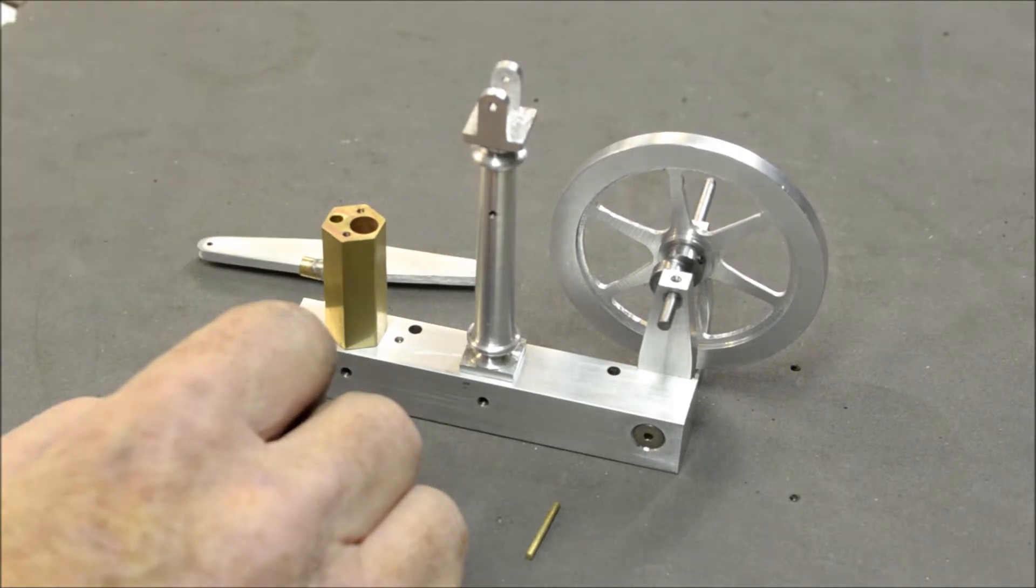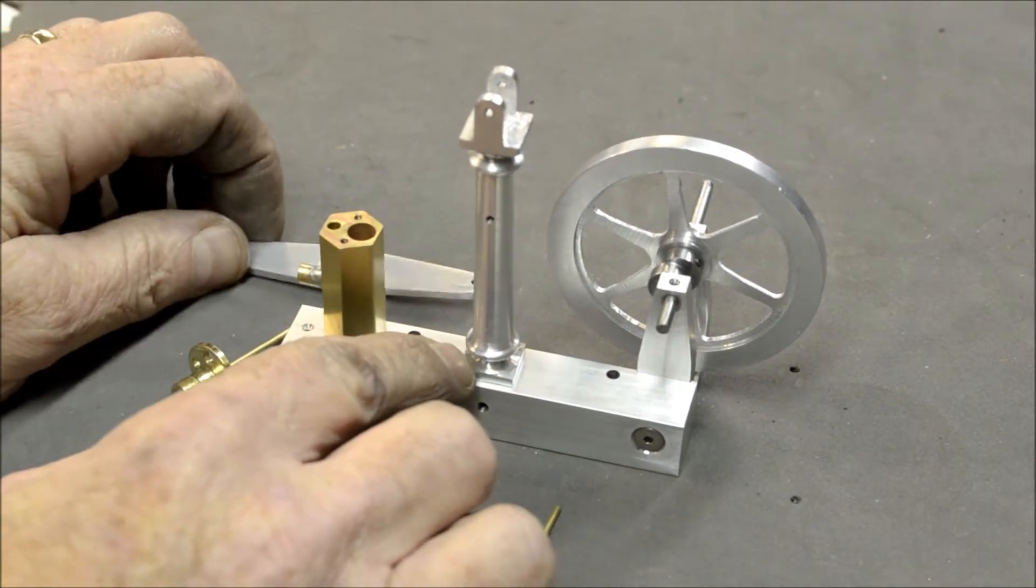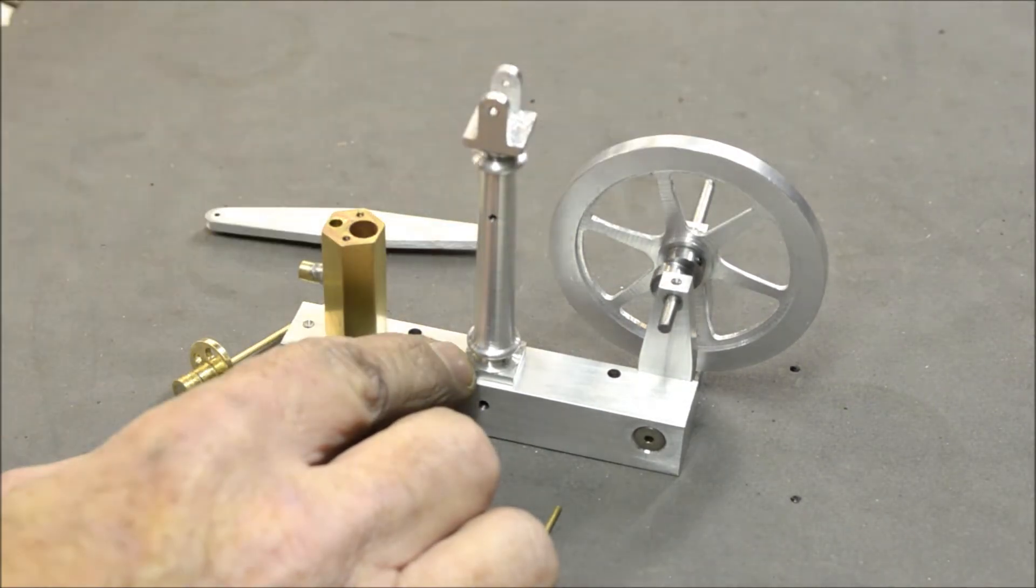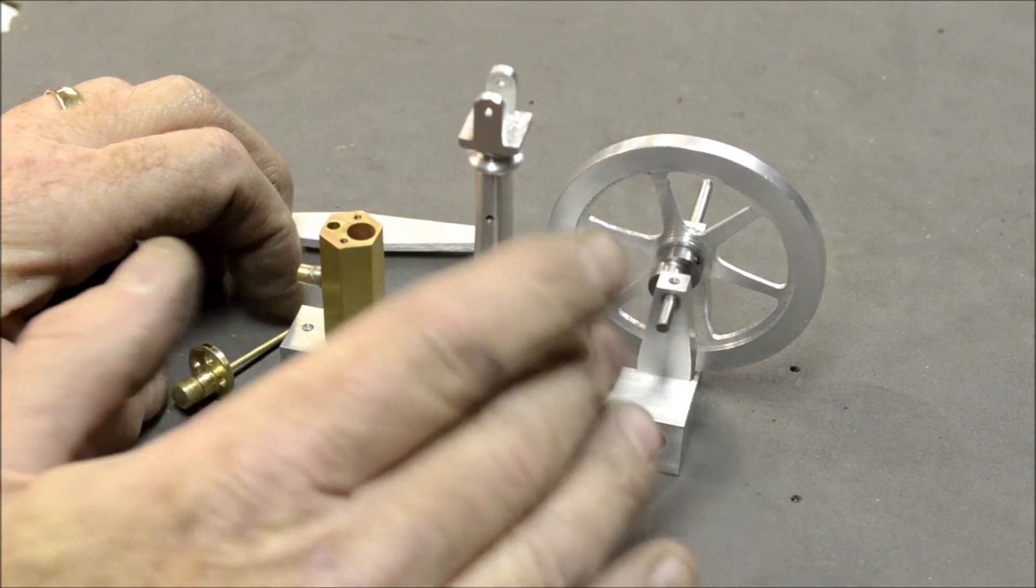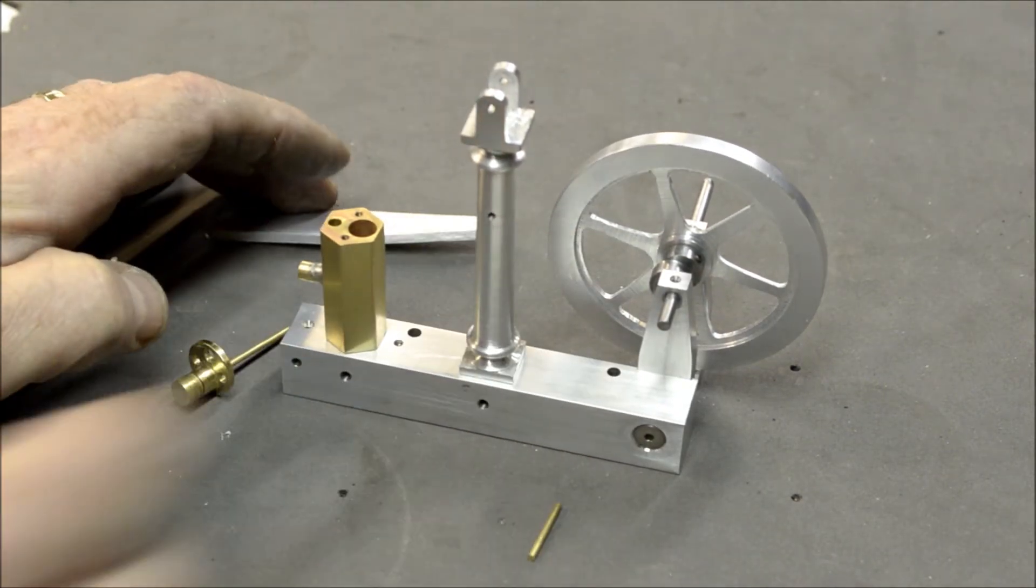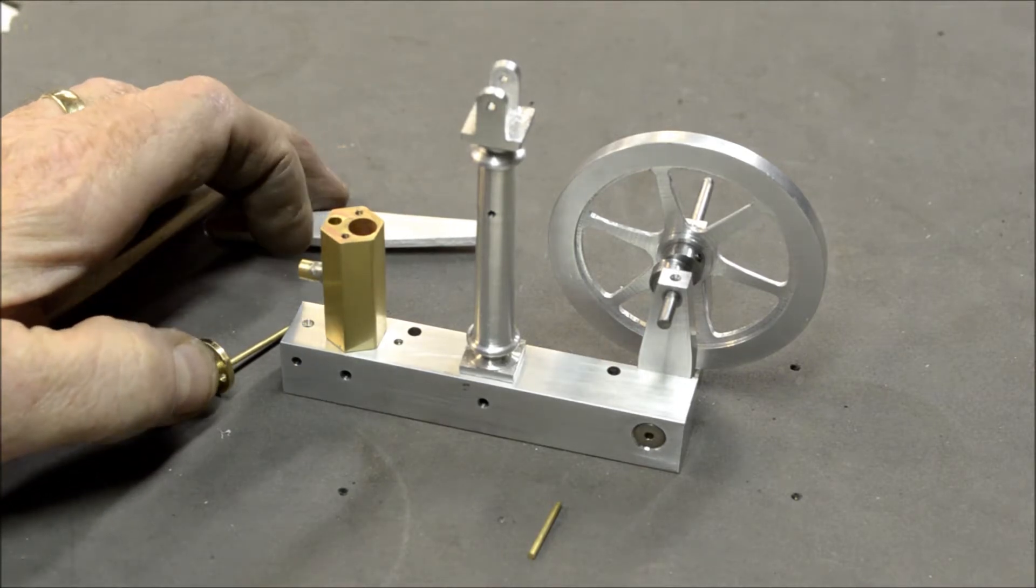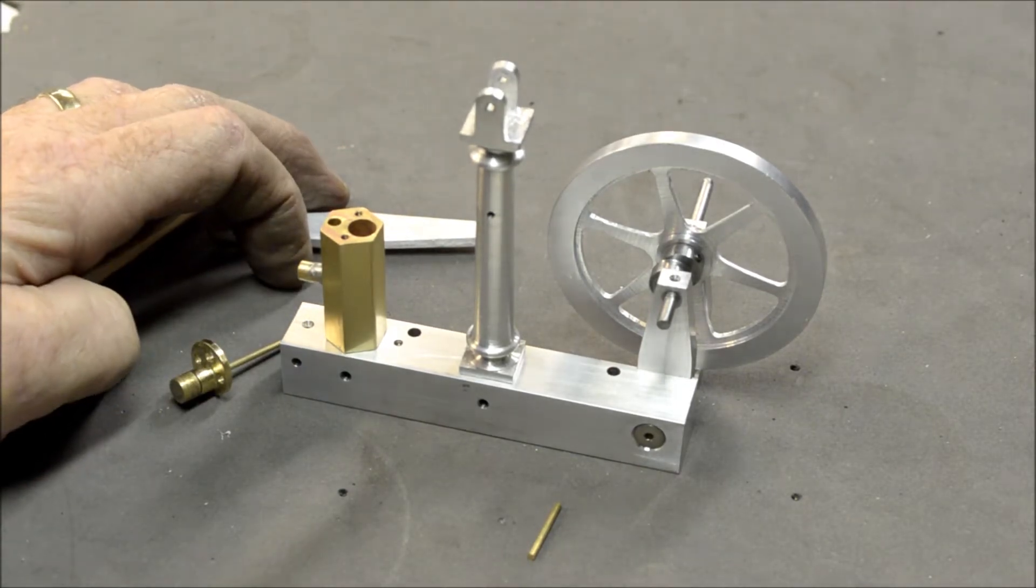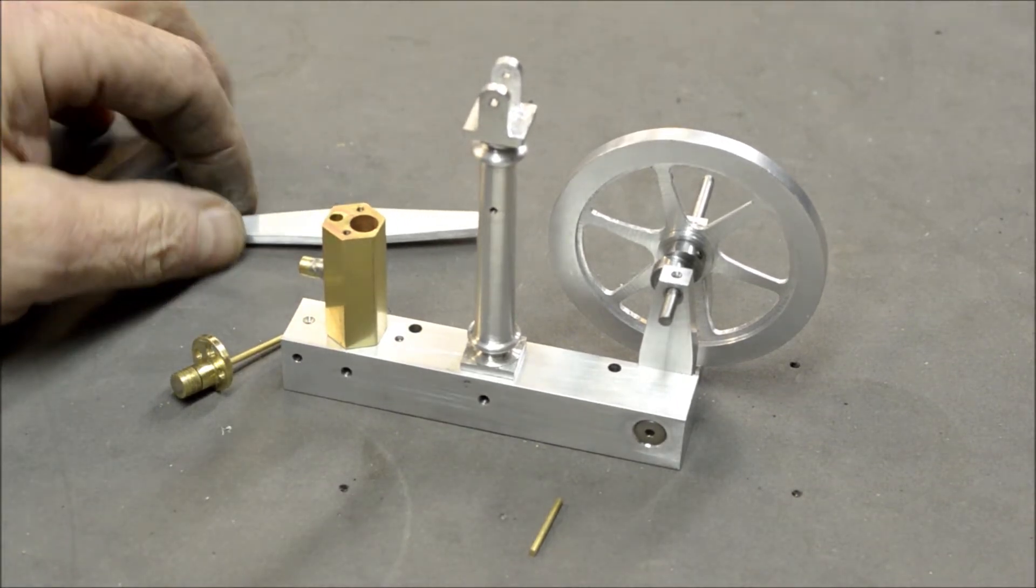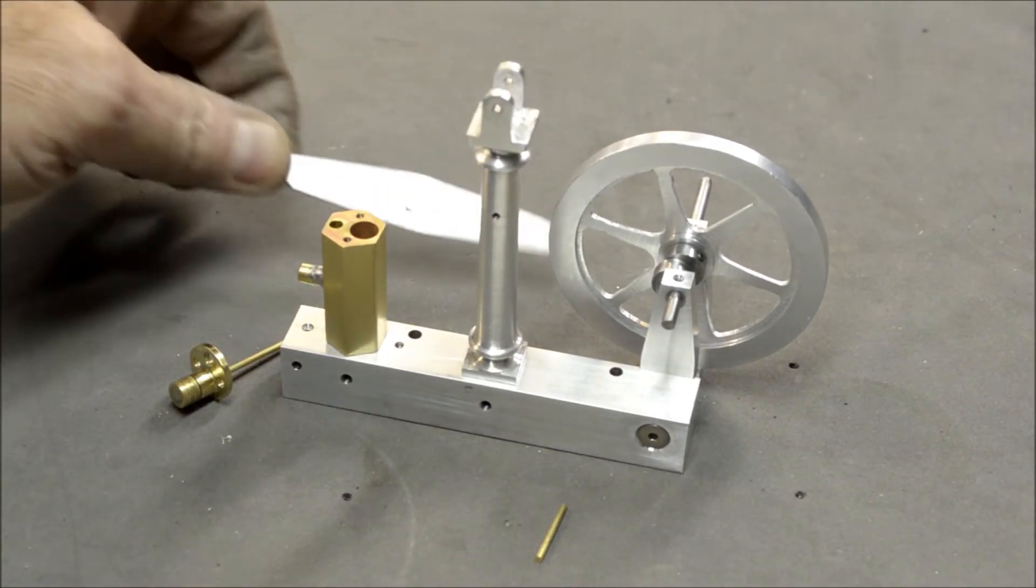But this is how it's coming along. The column is done, the beam is done, the flywheel, the eccentric, the flywheel bearing, the base—most of this, all of this we have—it's already been videotaped and uploaded to YouTube. So this is coming together and getting there. A lot of little pieces.